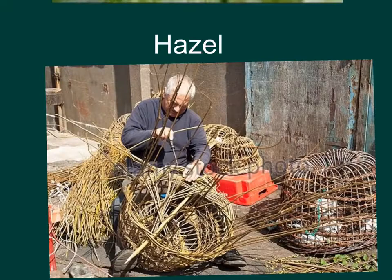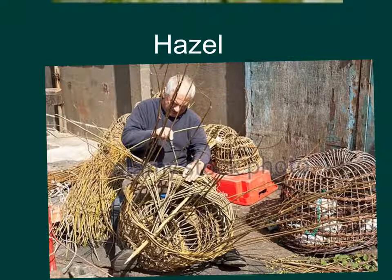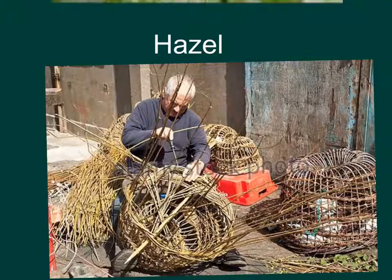Shown in the picture here we have a man working making fish traps or lobster pots — traditional type of lobster pots — and as you can see the rods are all quite straight and they have a flexibility to endure the conditions they would be exposed to.